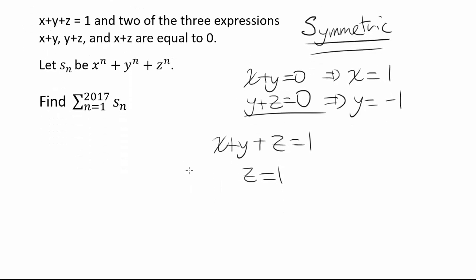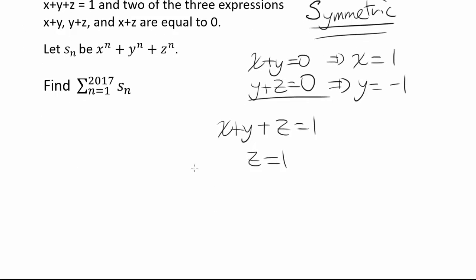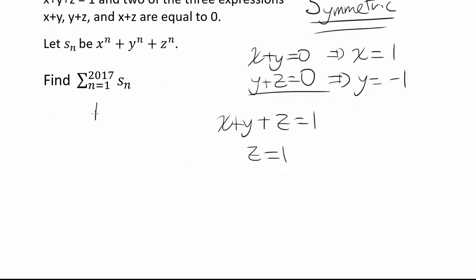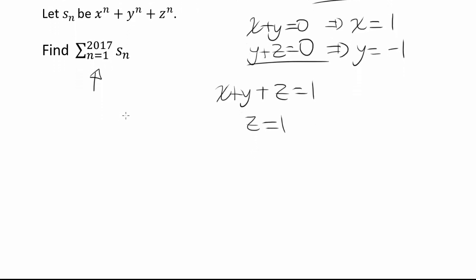So we have figured out what x, y, and z are. So now we gotta evaluate this expression. Find the sum from n equals 1 to 2017 of S sub n. And you know S sub n is x to the n plus y to the n plus z to the n.